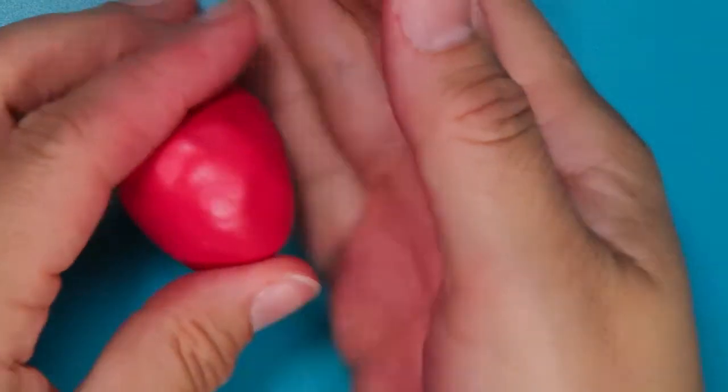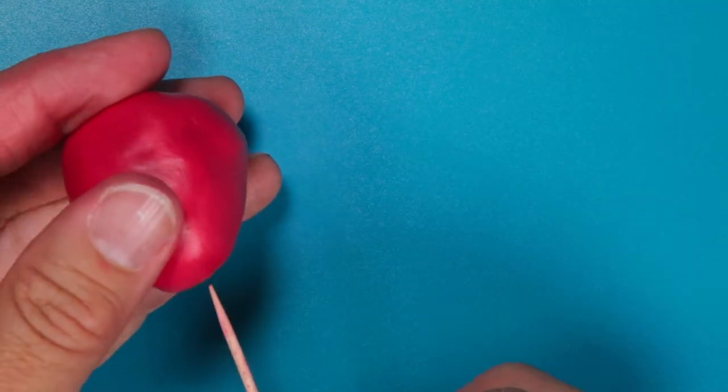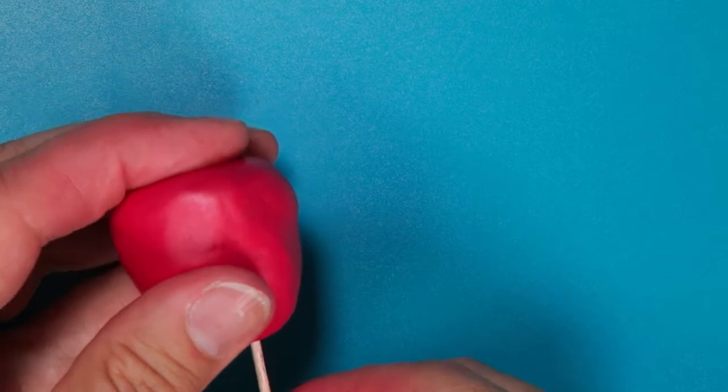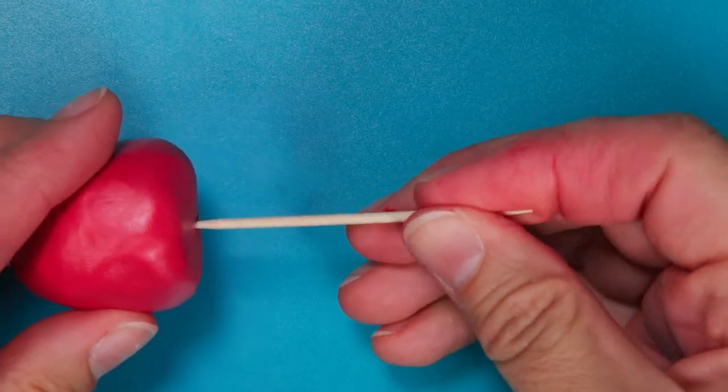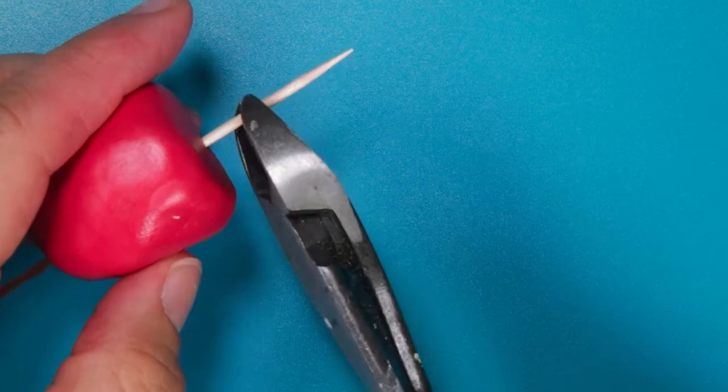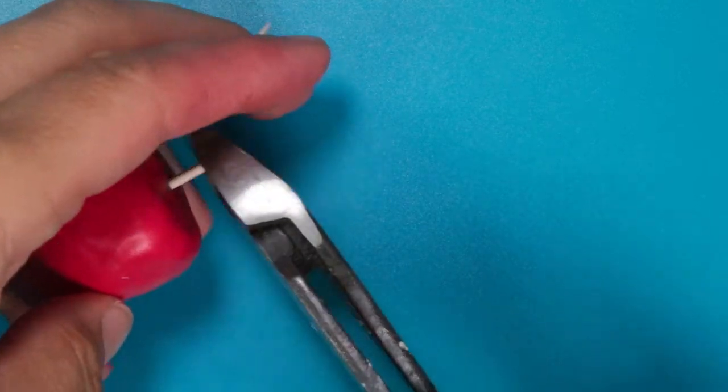Before we get too far, we're going to put a toothpick in the bottom of the strawberry and then we're also going to put a toothpick on the top. You'll want to cut off that little extra bit because this is going to be your stem.